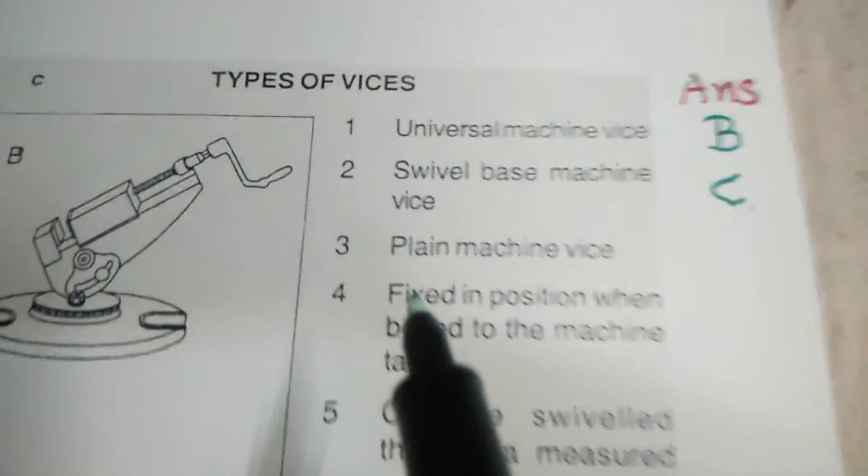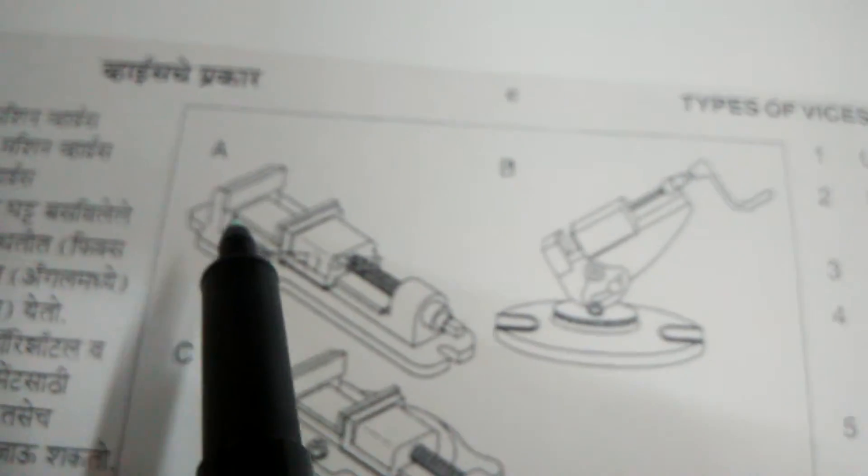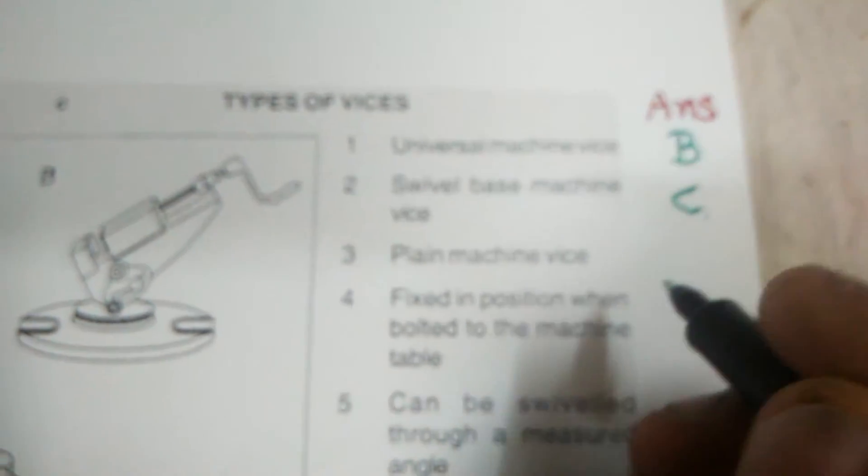Third question: Plain Machine Vice. In this diagram, this is Plain Machine Vice. Write down here, A.